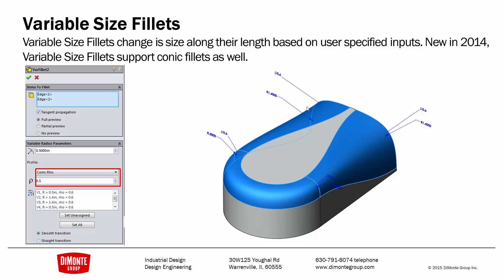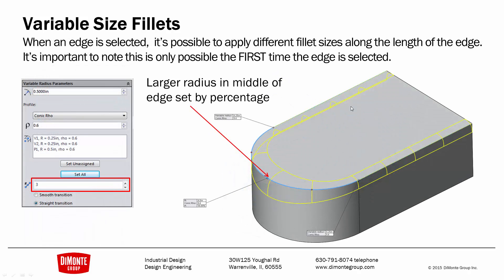Variable Size Fillets change in size along their length based on user-specified inputs, and new in SOLIDWORKS 2014, the Variable Size Fillet also supports the Conic tool. When an edge is first selected, it's possible to select various points along its edge. Here, I'll define the size of the fillet at 50% along its path — this is how edges are controlled as percents along the path.